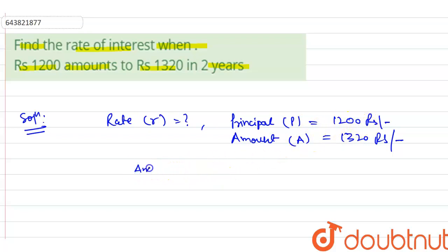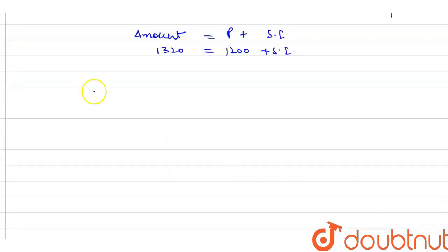If amount is 1320 rupees and principal is 1200 rupees, what we know is that amount is always equal to principal plus simple interest. So amount is equal to 1320 rupees, principal is 1200 rupees plus SI.